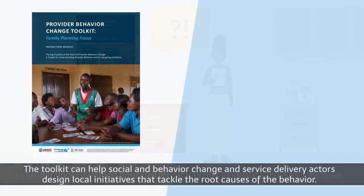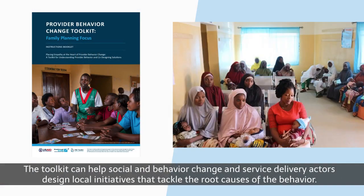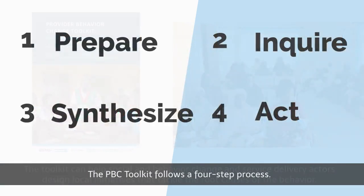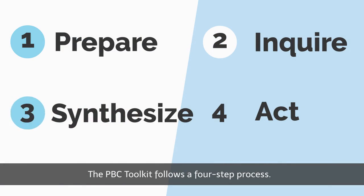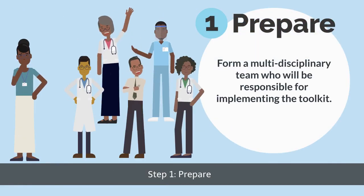The toolkit can help social and behaviour change and service delivery actors design local initiatives that tackle the root causes of the behaviour. The PBC Toolkit follows a four-step process. Step 1: Prepare.